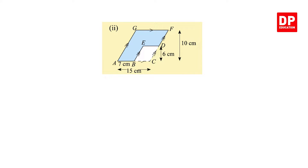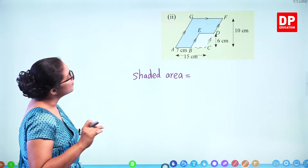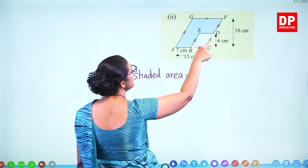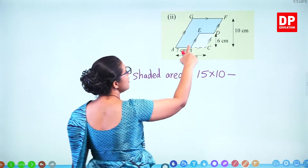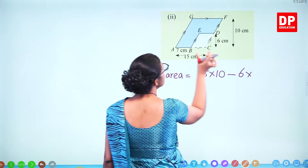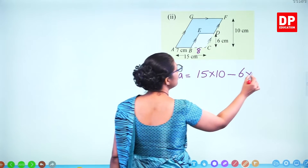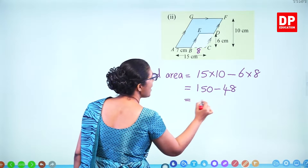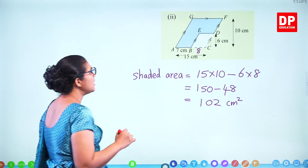For the second figure, find the shaded area. Area of the bigger parallelogram minus area of the smaller one gives the shaded part. Bigger one: base 15 times perpendicular height 10 equals 150. Smaller one: base equals 15 minus 7 which is 8, height is 6, so 8 times 6 equals 48. Shaded area equals 150 minus 48 equals 102 square centimeters.